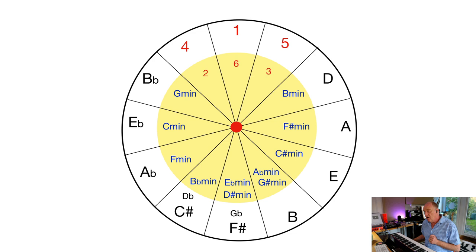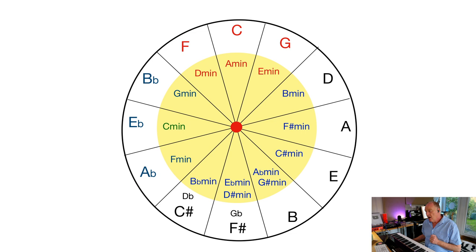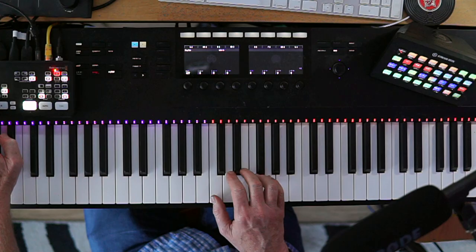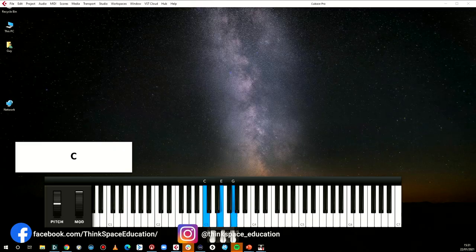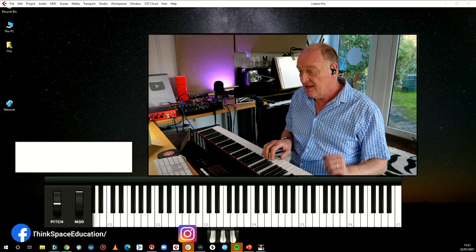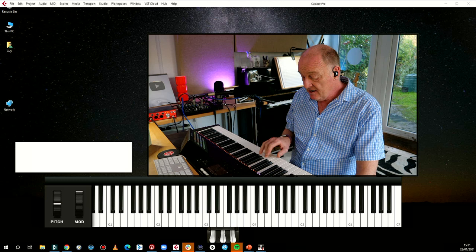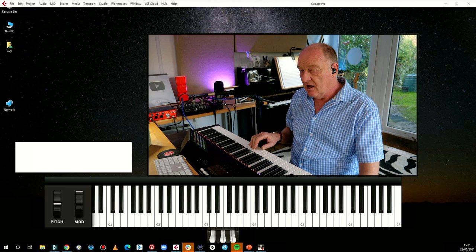Now let's look at those relative minors: A minor, D minor, and E minor. So what we've actually got are all, bar one, the chords you can form on the white notes in C major: C major triad, D minor, E minor, F major, G major, A minor, and the one we don't mention — B diminished — before getting back to C.